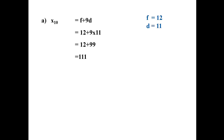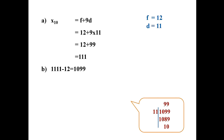Now we check whether 1111 is a term of this sequence. The difference between any two terms of an arithmetic sequence must be a multiple of the common difference. The difference between 1111 and the first term 12 is 1099. Since 1099 is not a multiple of 11 (there is a remainder), 1111 cannot be a term of this sequence.